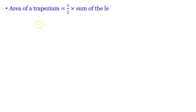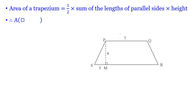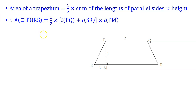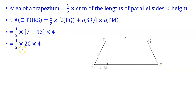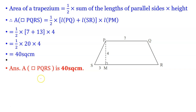Area of trapezium PQRS = 1/2 × (PQ + SR) × PM = 1/2 × (7 + 13) × 4 = 1/2 × 20 × 4 = 10 × 4 = 40 square cm. Therefore, the area of trapezium PQRS is 40 square cm.